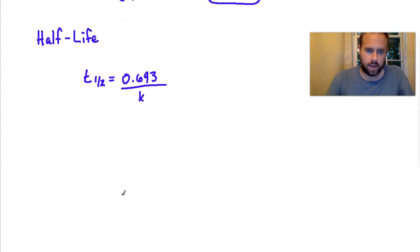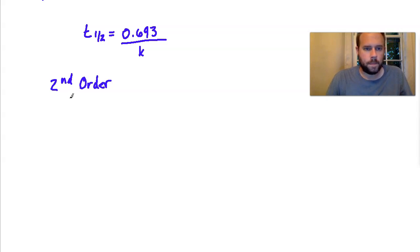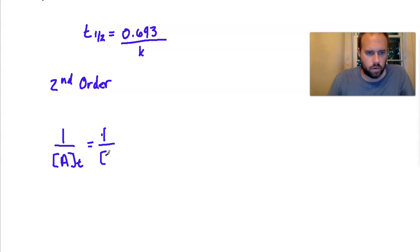Now we'll look at second order reactions. For a second order reaction we want a similar slope equation approach. It turns out that for second order reactions: one over [A] at time t equals one over [A]0 plus kt. Notice this time we have one over the concentration values and there is no natural log.